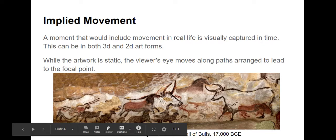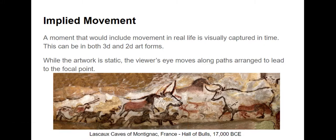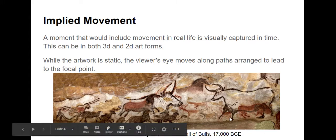In implied movement, the movement that you see looks almost like a photograph of an activity in a still frame. In the example we have the Lascaux Caves Hall of Bulls. It looks like a photograph — well, they're cave paintings — but it looks like a photograph of what would be actual bulls running. You have their extended legs and they look like they are headed from the ones on the left towards the one on the right. There's this sense of movement that looks as though it's been captured in time.